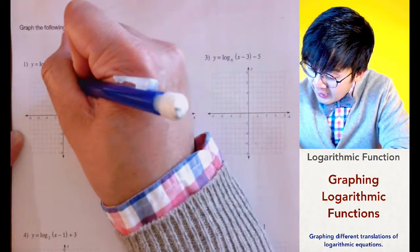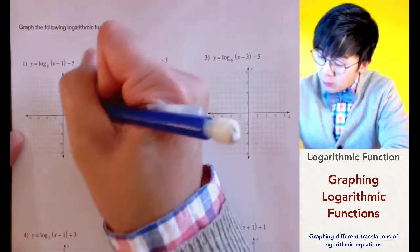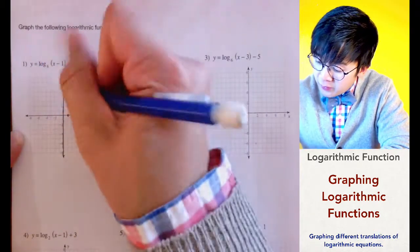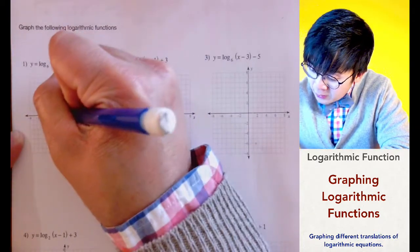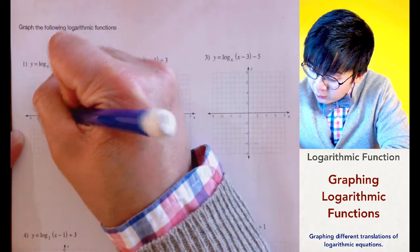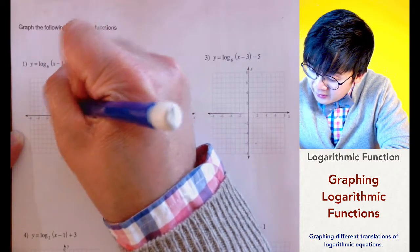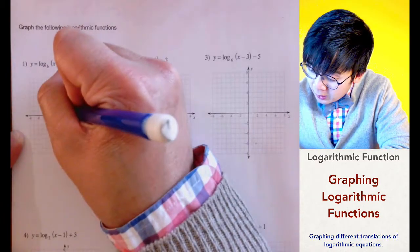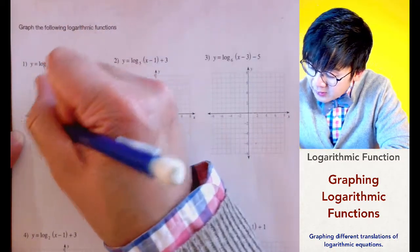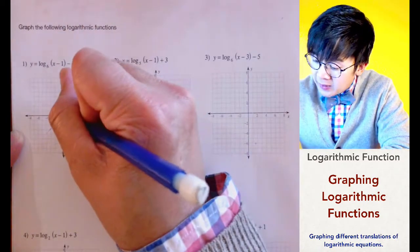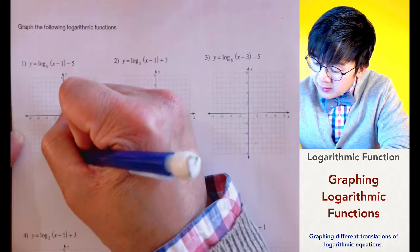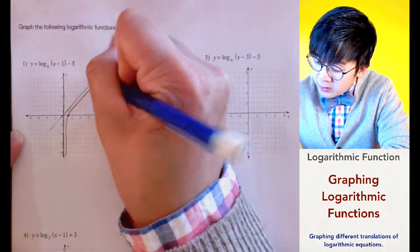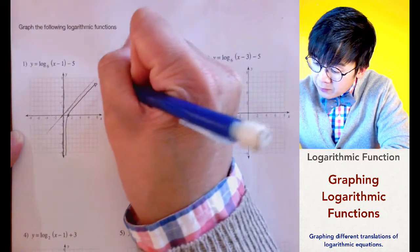The vertical asymptote of our function will always be 1 unit to the left of the point of inflection. The slant asymptote is going to be y equals x, so it's always 1 unit going up. This is the slant asymptote. Once we have established our basic graph of the logarithmic function, which is log of x to the base 6, we can proceed with the translation.